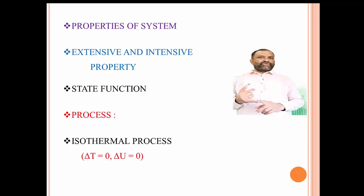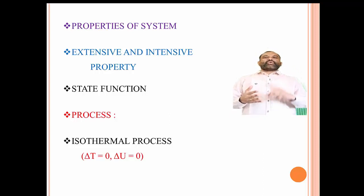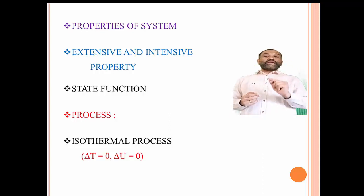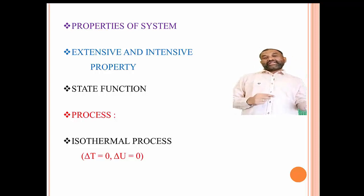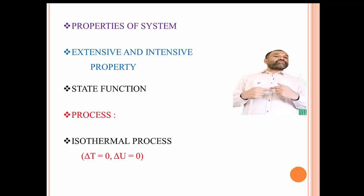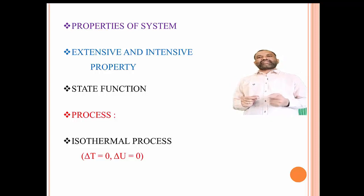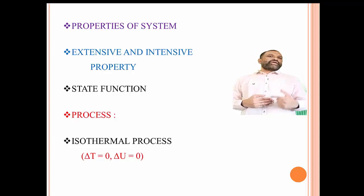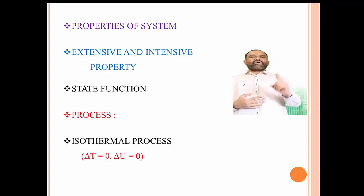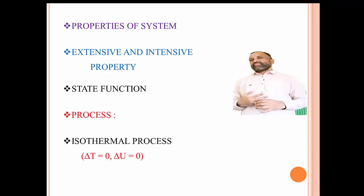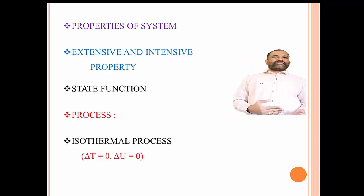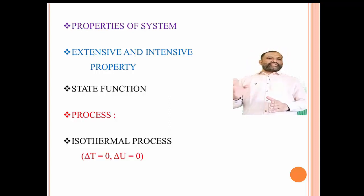A thermodynamic property whose magnitude depends only upon the state — that is the initial state and the final state — of a system is called a state function. It does not depend upon the path followed by a system. A path function is a property whose value or magnitude depends upon the path, way, or mechanism followed by a process; such a property is known as a path function.